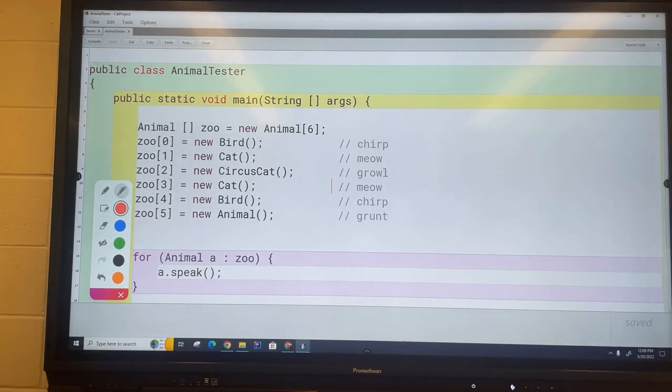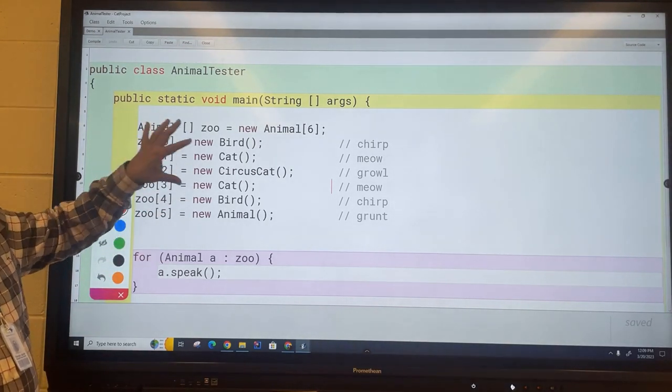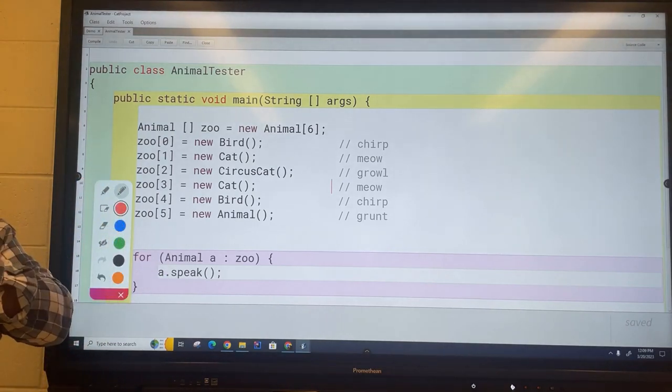So the thing I want to show you today is let's say we have this array and we don't know what's in it but we want to pick out the birds. Let's just take that as an example.